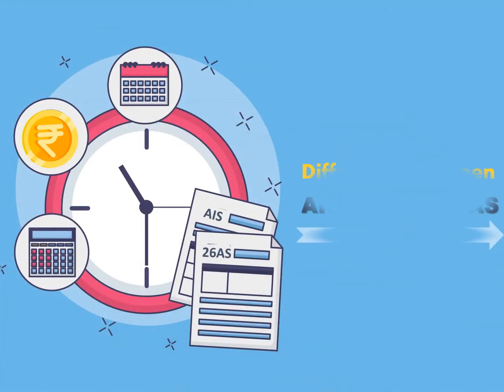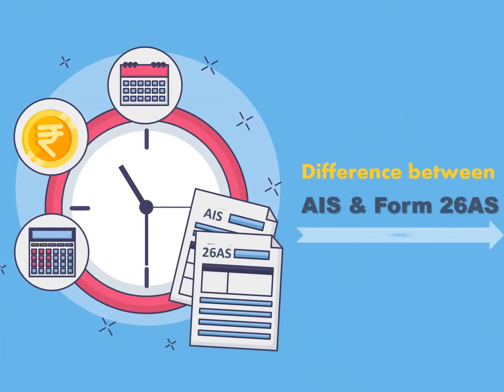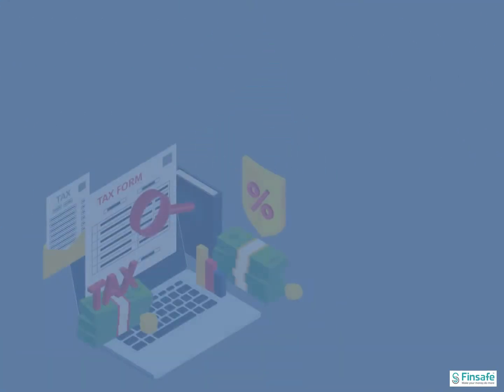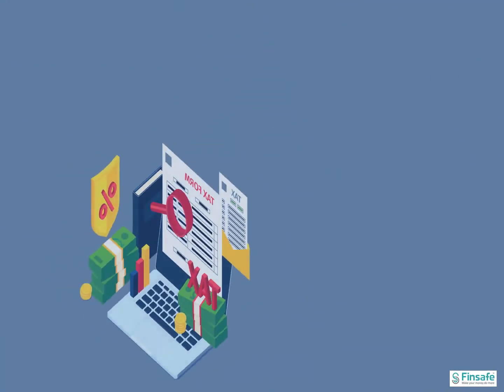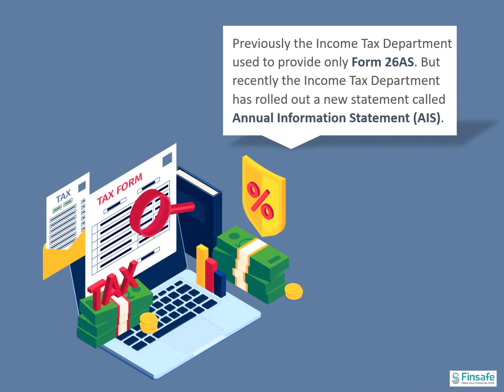What is the difference between AIS and Form 26AS? Previously, the Income Tax Department used to provide only Form 26AS, but from last year, they have rolled out a new statement known as the Annual Information Statement. So, first off, what is Form 26AS?